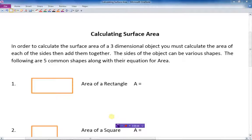In order to calculate the surface area of a three-dimensional object, you must calculate the area of each of the sides of the object, then add those areas together to get the total surface area. The sides of the object can be various shapes, and so in this screencast we're going to focus on the various shapes you might find. We're going to choose five common shapes for calculating area.